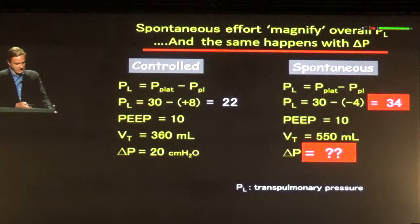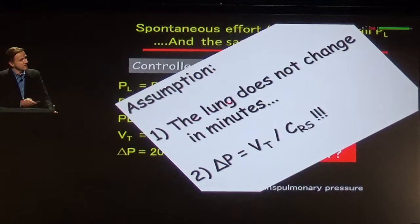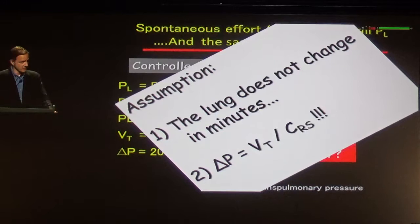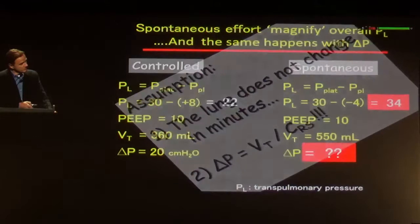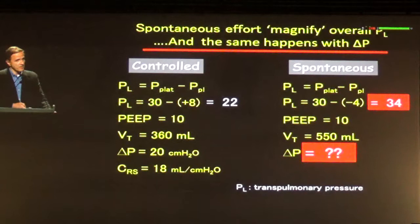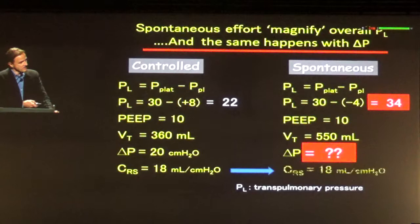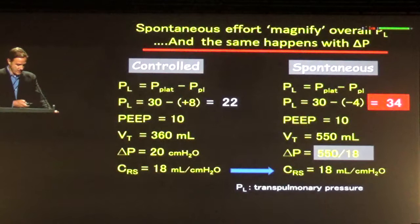What we could do here is something very practical. You make a simple assumption that the lung does not change in minutes — compliance of the lung does not change from one minute to the next; it takes hours or days. And we know that driving pressure equals tidal volume divided by compliance. So you give a shot of Propofol, measure lung compliance, make the assumption that a few minutes later compliance is exactly the same — still 18 — and then you calculate driving pressure: 550 mL divided by 18. And then you get very concerned.